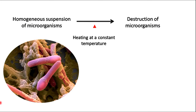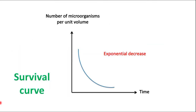If we heat a homogeneous suspension of microorganisms at a constant temperature, the destruction of microorganisms commonly follows a logarithmic order. If we draw a plot of number of microorganisms per unit volume versus time at a constant temperature heating process, we will obtain an exponential plot as shown in the diagram. This exponential decrease is also called a survival curve.